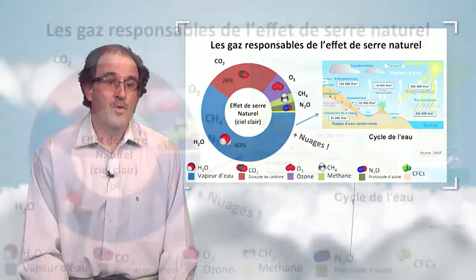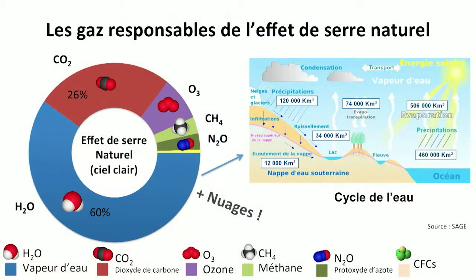Water vapor represents 60% of the natural greenhouse effect — it is the first gas for the greenhouse effect. Water vapor has a very specific cycle: evaporation above the continents and oceans, transportation into the atmosphere, condensation, and rain — a very short cycle. The duration of life of a water molecule is approximately 11 days, and it is slower when there are infiltrations into the aquifers.